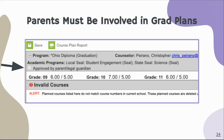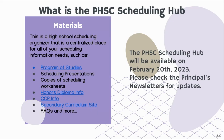It is important that you have a parent or guardian check so they're aware of the classes you are requesting and what your plan is going forward. At the top of your academic planner when you go in to request, there will be a checkbox — it's really small at the top left-hand corner — that says 'Approved by parent or legal guardian.' Please make sure that a parent or legal guardian checks that box for us. It just gets everybody on the same page. The scheduling hub has all the materials you see here today and more — the program of studies, scheduling presentations, copies of the scheduling worksheets and balancing sheets, honors diploma information — everything that has to do with scheduling. Please make sure you're checking that and also checking the principal's newsletters for updates.